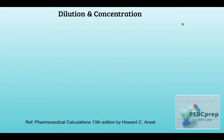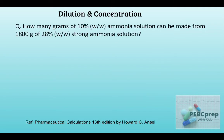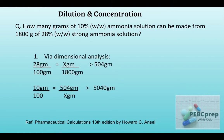Next sample question: how many grams of a 10 percent weight-by-weight ammonia solution can be made from 1800 grams of a 28 percent weight-by-weight strong ammonia solution? First, we solve with dimensional analysis. 28 percent means 28 grams in 100 grams of solution. So in 1800 grams, we get 504 grams of ammonia.